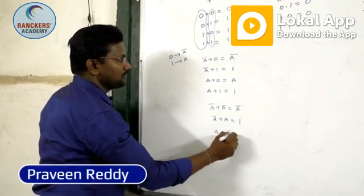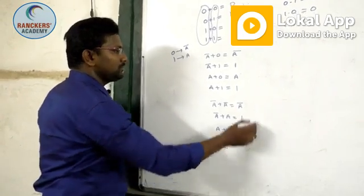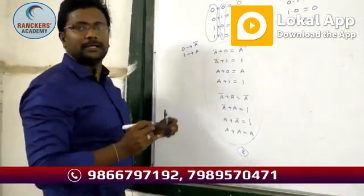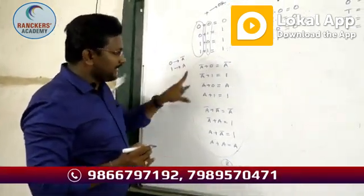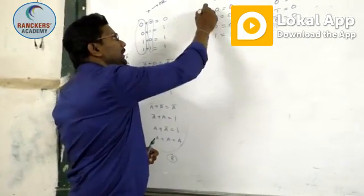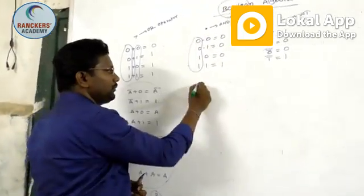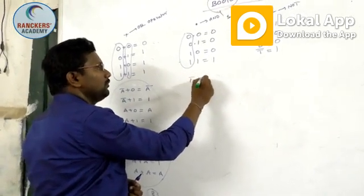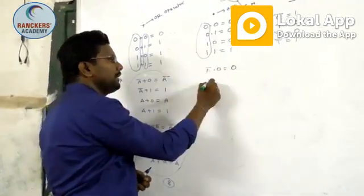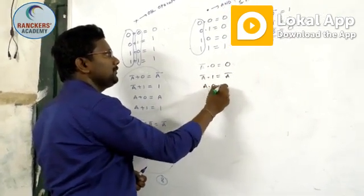A bar plus A is equal to one. A plus A bar is equal to one. A plus A is equal to A. Using the plus (OR) operator, just eight formulas are there. These eight formulas cover all cases for the OR operator.